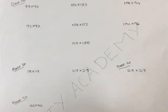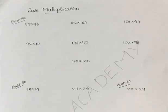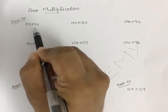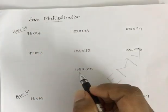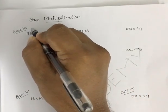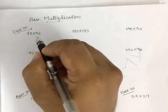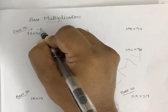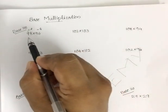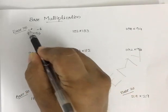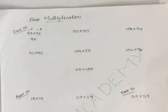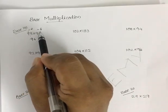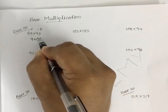Next, we will deal with base multiplication, which is another important trick. I take 98 into 96, taking 100 as the base. 98 is 2 less than 100, so I write minus 2. 96 is 4 less than 100, so I write minus 4. The first step: subtract 98 minus 4 or 96 minus 2 — either way you get 94. Then find the product of minus 2 and minus 4, which is plus 8. So you write it as 9408, not 948.